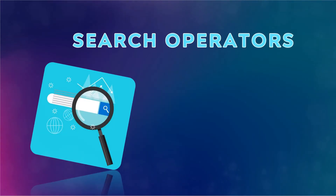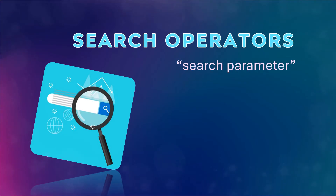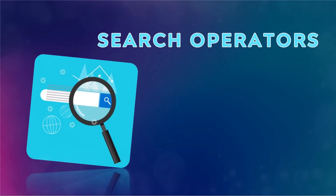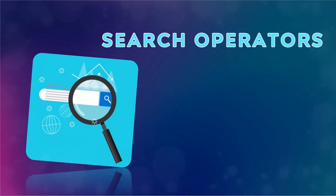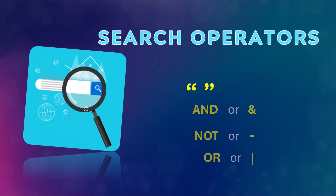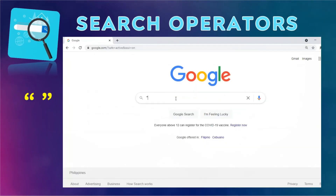We also have search operators when we do research in different search engines. Search operators, sometimes referred to as search parameters, are characters or strings of characters used in a search engine query to narrow the focus of the search. Some examples are: quotations, AND, NOT, and OR.